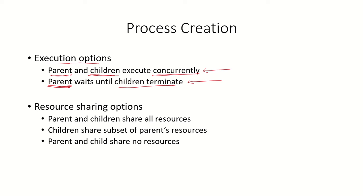What are the resource sharing options? The first option is that the children share all the resources of the parent — which could be I/O resources, memory, open files, locks, and semaphores. The second option is that the children use only a subset of the parent's resources. The third option is that the parent and child share no resources.